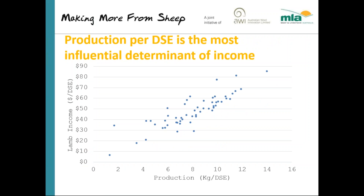Income has the greatest influence on profit. When we look at what influences income — isolating lamb income per DSE, which is the main driver at 95% of total income — it is this production figure, kilograms of lamb dressed weight per DSE, that has the main influence. The graph shows variation from 2 kg up to 14 kg of lamb per DSE, driving lamb income from $10 up to $80 per DSE.